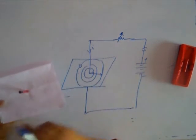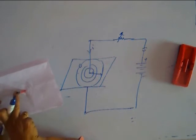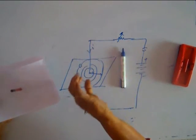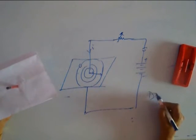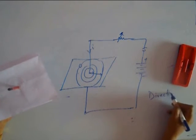As far as the direction is concerned, you place a compass needle here or anywhere and I will tell you exactly how to find the direction. To find the direction of the magnetic field, we have a thumb rule.